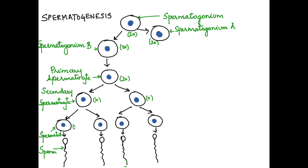The spermatogonium cells are diploid cells, and the primary spermatocyte is also a diploid cell. The other cells—the secondary spermatocytes, spermatids, and sperms—are haploid cells.